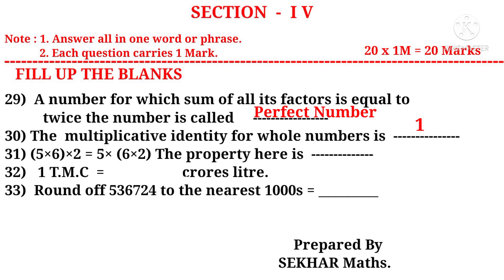31: 5 into 6 into 2 is equal to 5 into 6 into 2. The property here is. Observe that 5, 6, 2 are the same numbers on the left hand side and right hand side. Bracket is only changed. So this property is called associative property under multiplication.